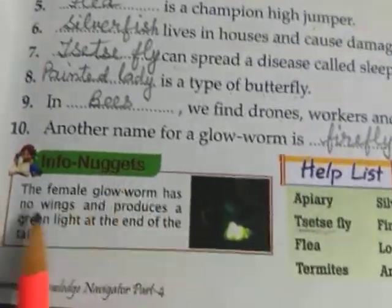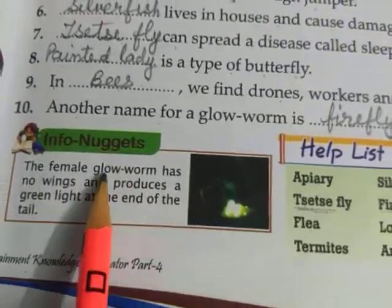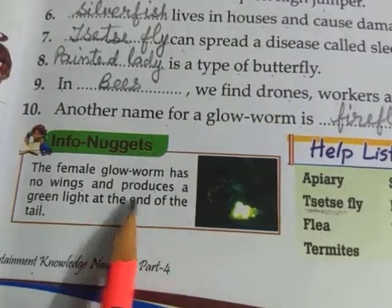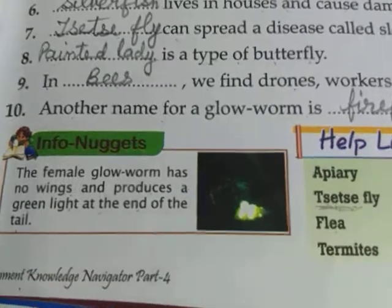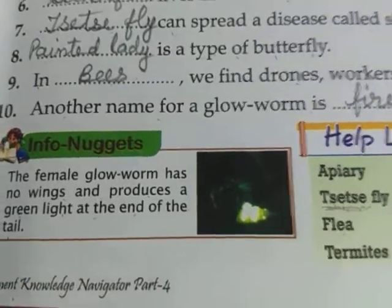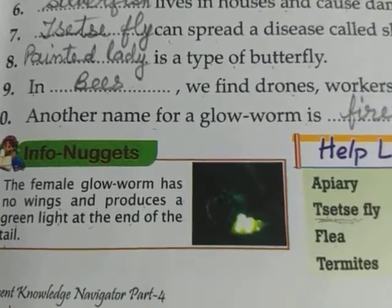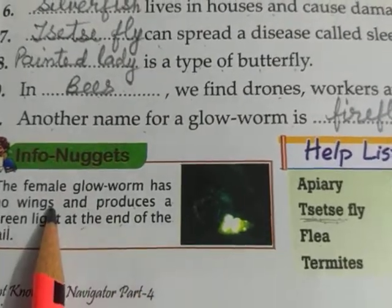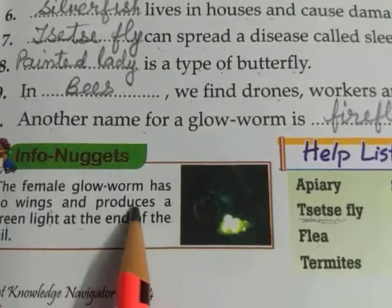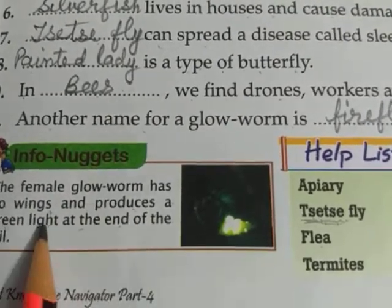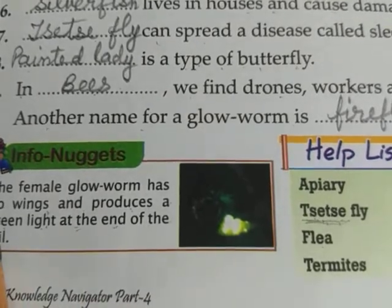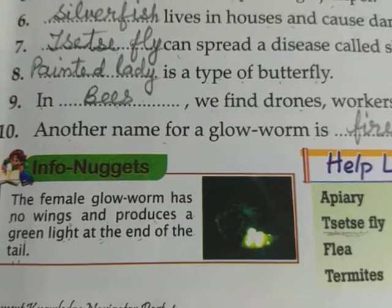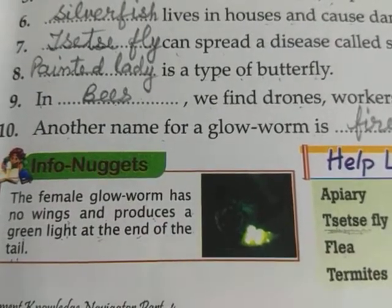Here is another info nugget: the female glow worm has no wings and produces a green light at the end of its tail.